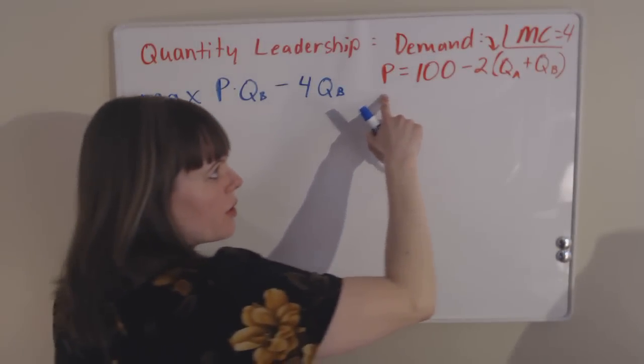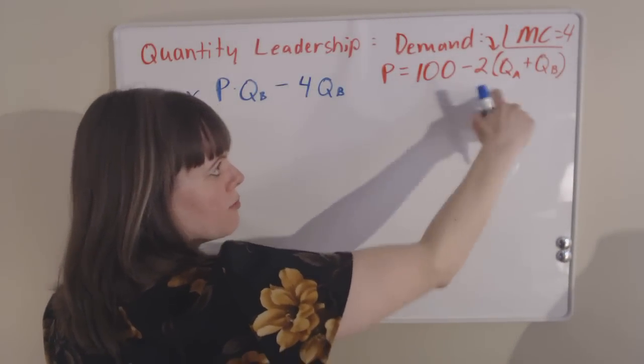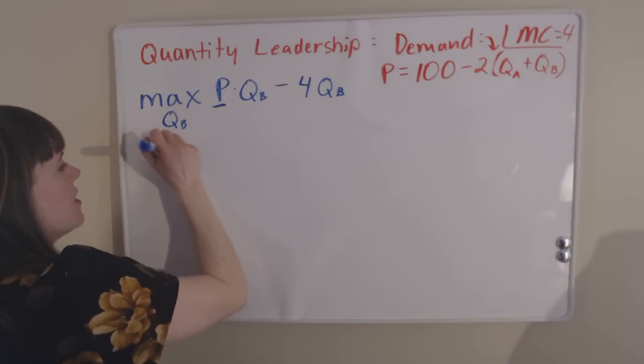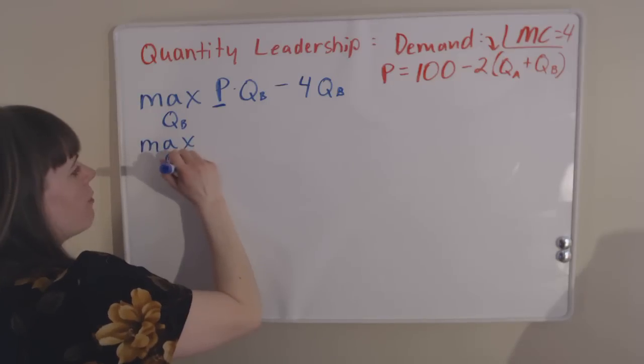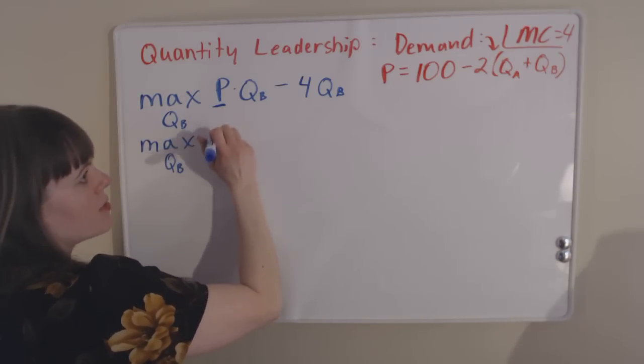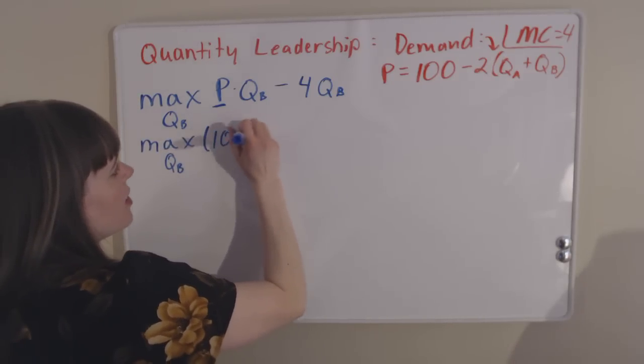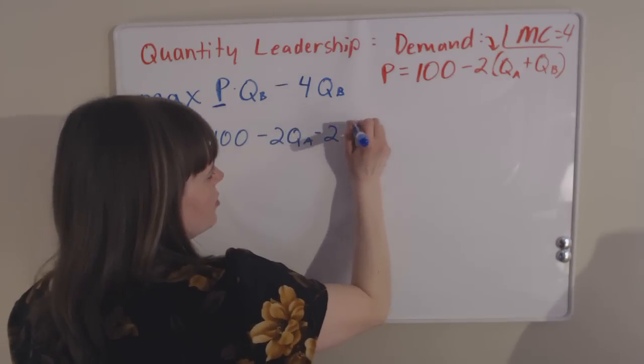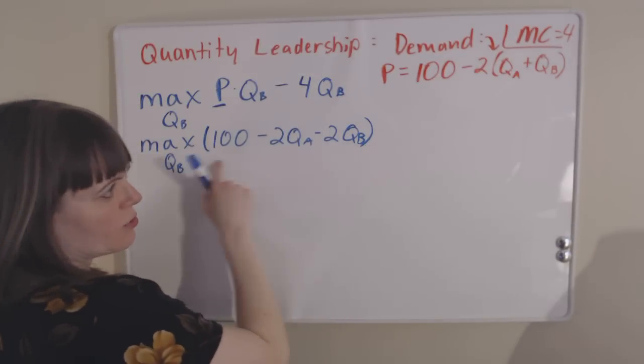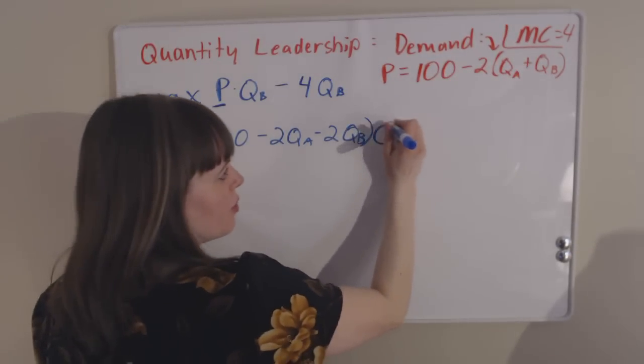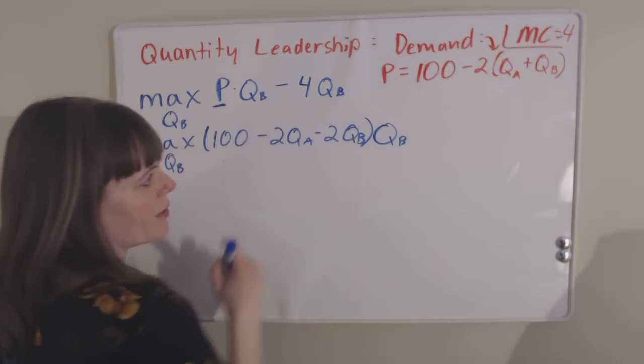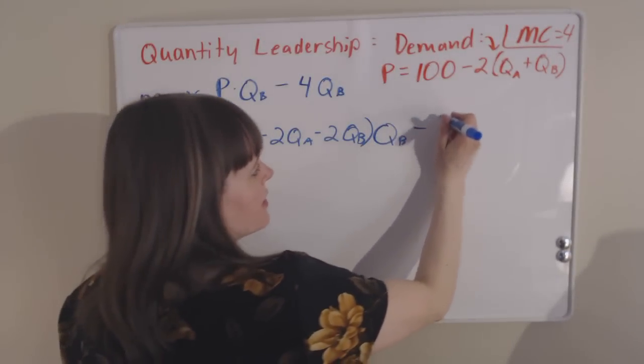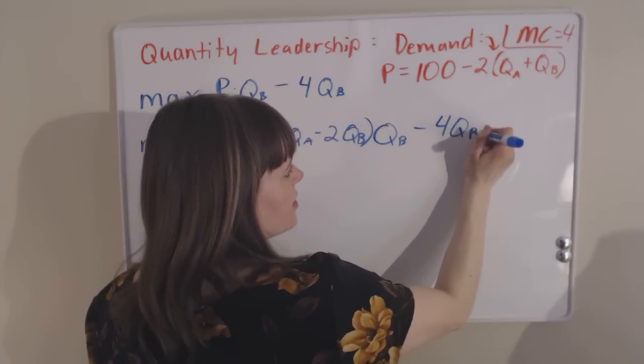As usual, we plug in our demand function. The demand is price equals all this stuff, so we're going to plug that in for our price to get a full form of our profit maximization problem. It's going to be 100 minus 2QA minus 2QB times quantity for firm B. This is our total revenue now, price times quantity, minus our total production costs for QB.